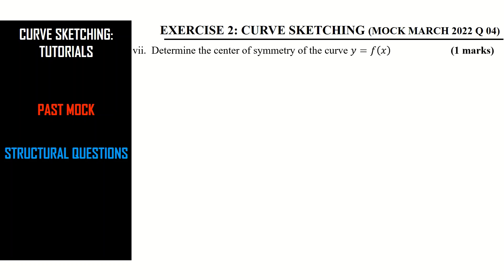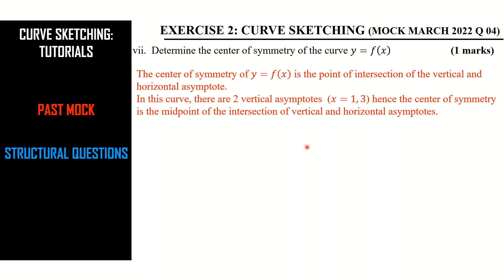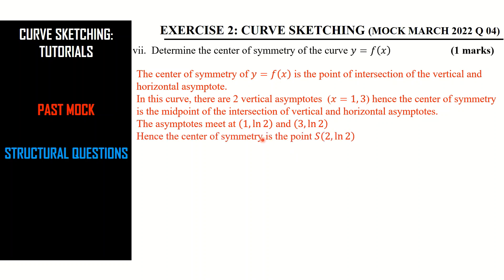Roman seven asks us to determine the center of symmetry of the curve y = f(x). The center of symmetry is the midpoint of the intersections of the vertical and horizontal asymptotes. The asymptotes meet at (1, ln 2) and (3, ln 2). The center of symmetry is the midpoint of these two points, which gives the point (2, ln 2).